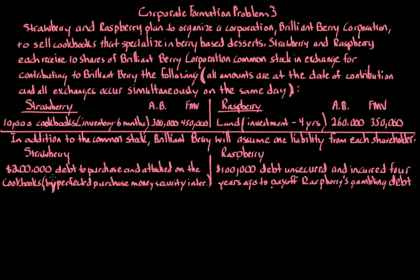All amounts are at the date of contribution, and all exchanges occur on the same day. Strawberry is going to get 10 out of 20 shares of common stock — 50% of the ownership of the company. In exchange, Strawberry is going to transfer to Brilliant Berry Corporation 10,000 cookbooks, which Strawberry held as inventory for six months. At the date of contribution, the adjusted basis is $300,000 and the fair market value is $450,000.